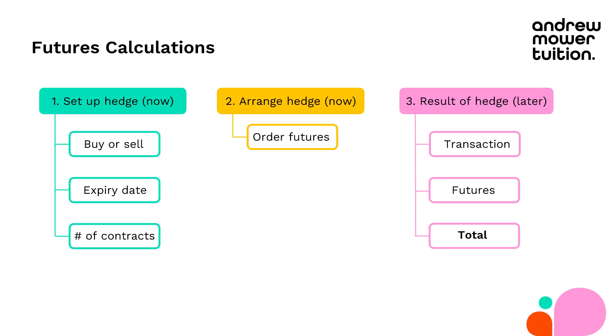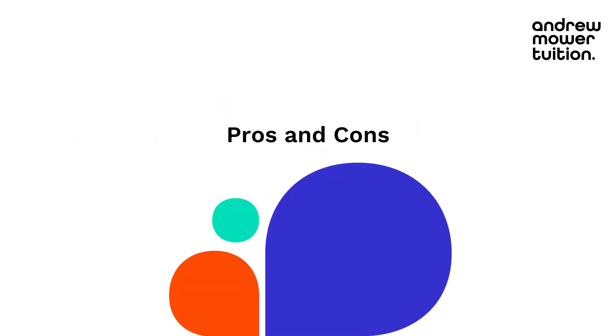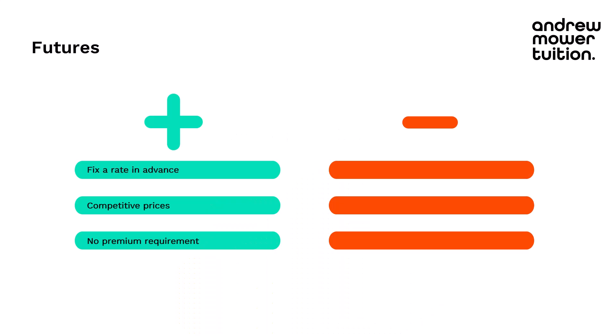Some pros and cons to finish up. The great things about futures: they allow you to fix the rate in advance, protecting your position and providing more certainty against the rate moving against you. They also offer competitive prices — because these are traded, futures can be good value compared to a forward rate from a bank. And you don't need to pay a premium upfront, unlike with options; the margin is not a huge cost.